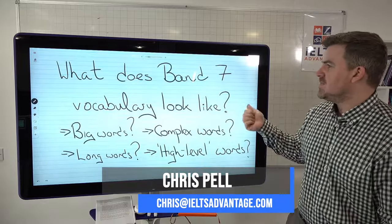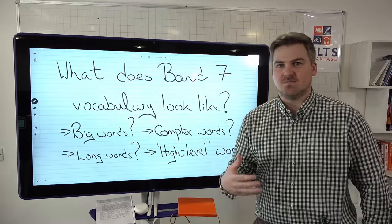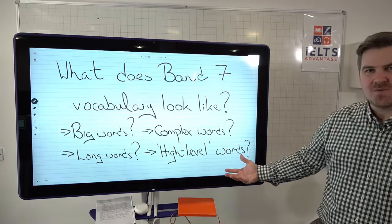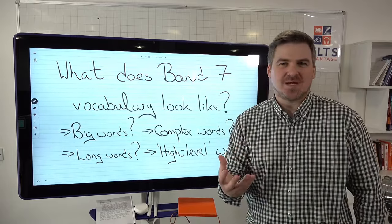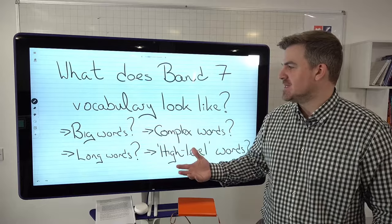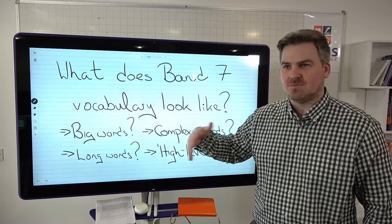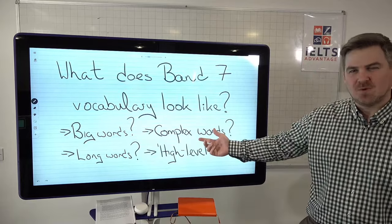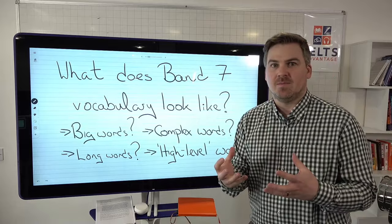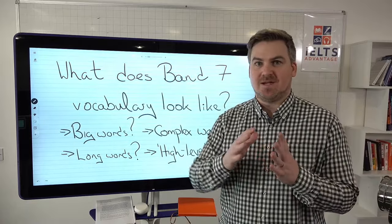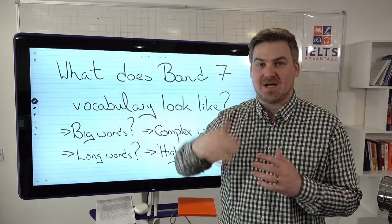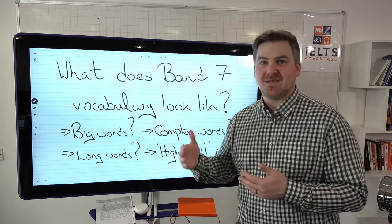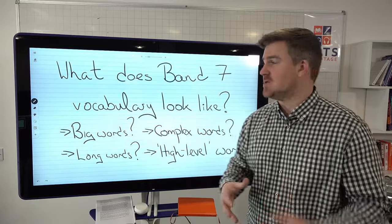So what does band seven vocabulary look like? When you talk to most students, they'll say things like big words, long words, complex words, high-level words. But when students ask me how to use more complex words, I'll normally ask them: what's a small word? What's a simple word? What's a low-level word? Most students have no idea what the difference is between a high-level word and a low-level word. So we're going to look at what is the key to getting a band seven or above when it comes to vocabulary.